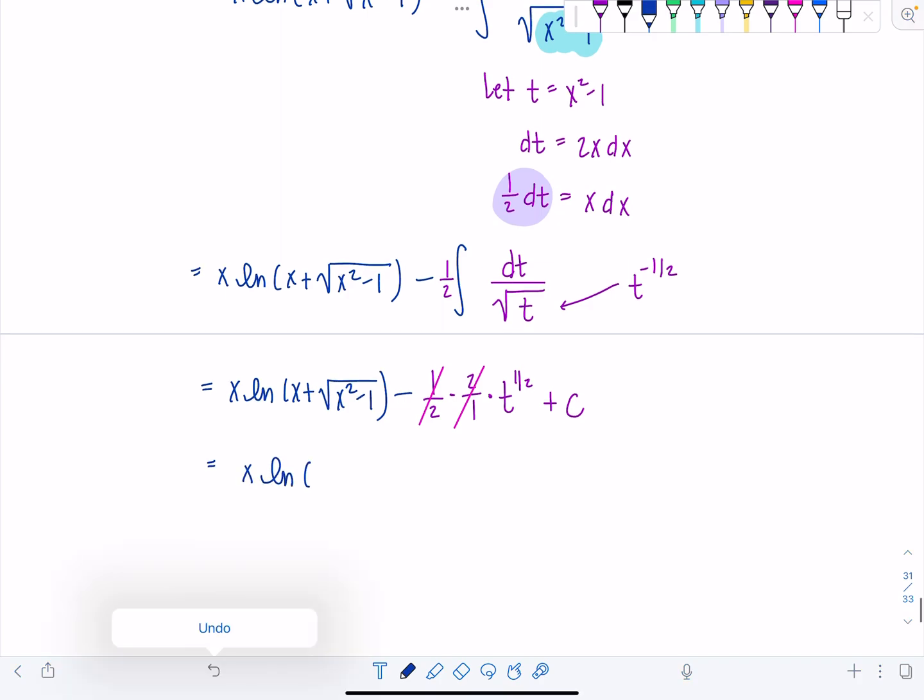So x natural log, whoop, x plus rad x squared minus 1. Close that up. Minus, instead of square root of t, I'm going to write square root x squared minus 1, since that's what t originally was, plus c.